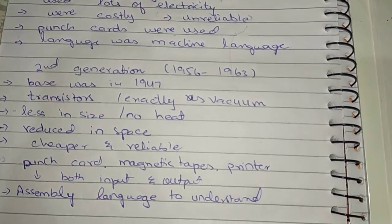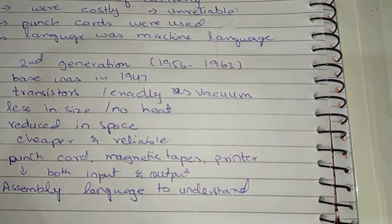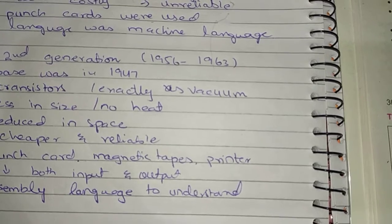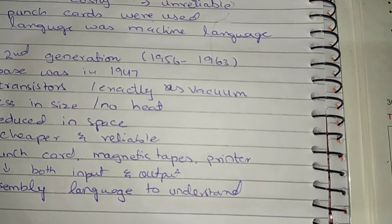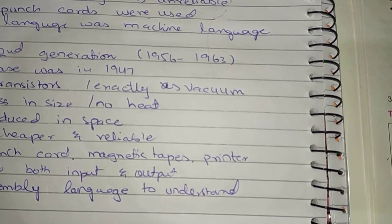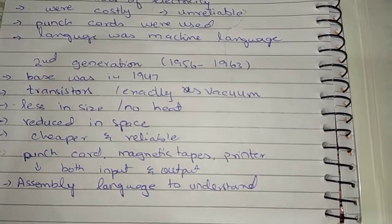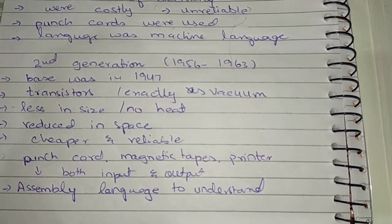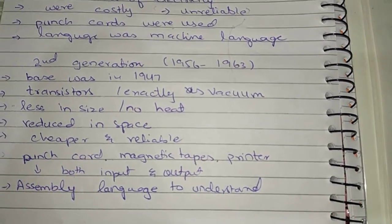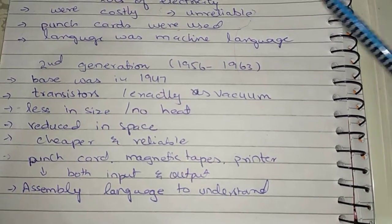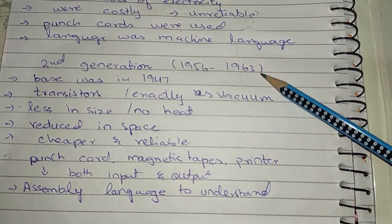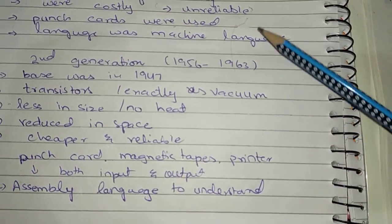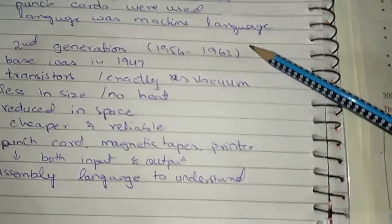The second generation computers were developed during 1956 to 1963. Basically its base was in 1947 and it was working from 1956 to 1963. Now let me tell you the difference between this and the first generation — what was the difference?